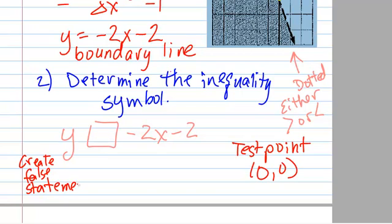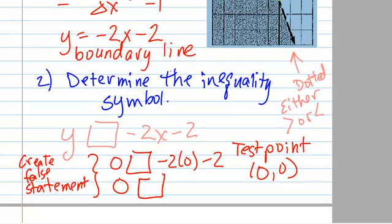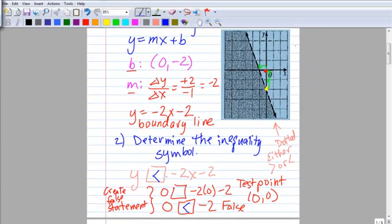How do we do that? Well, let's plug it in first. 0 instead of y is something in comparison to negative 2 times 0 minus 2, which means we're going to get 0 in comparison to negative 2. So 0 really is greater than negative 2. However, we want a false statement. So to create a false statement, we would have to use this symbol less than, because 0 is not actually less than negative 2, creating a false statement, which is what we wanted, which means that y is less than negative 2x minus 2.